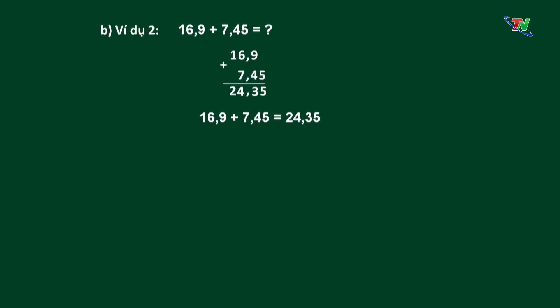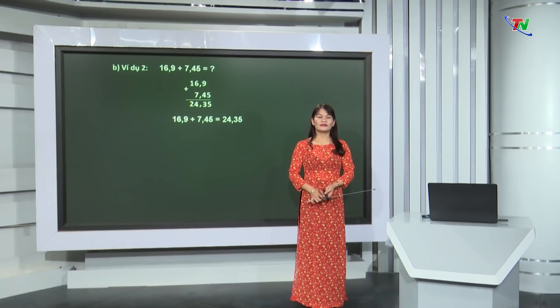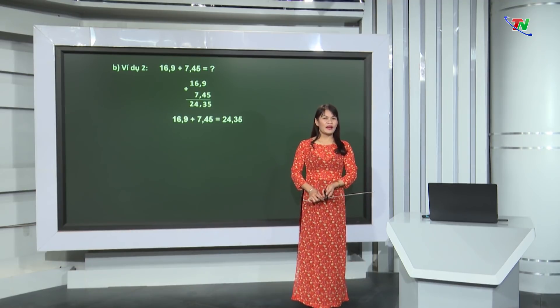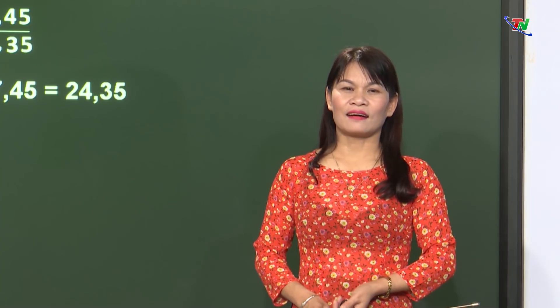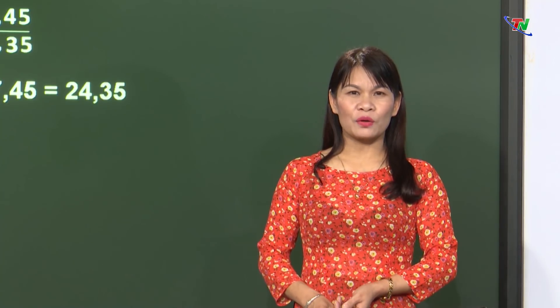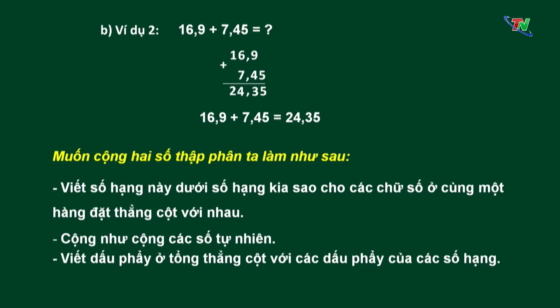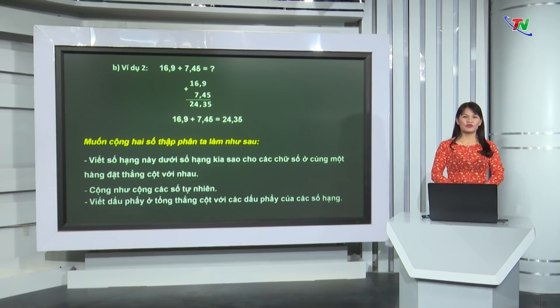Qua 2 ví dụ trên, cô đã giúp chúng ta củng cố lại cách thực hiện phép cộng 2 số thập phân. Muốn cộng 2 số thập phân, ta làm như sau: Viết số hạng này dưới số hạng kia sao cho các chữ số ở cùng 1 hàng đặt thẳng cột với nhau; cộng như cộng các số tự nhiên; viết dấu phẩy ở tổng thẳng cột với các dấu phẩy của các số hạng. Vậy là các em đã nắm chắc cách cộng 2 số thập phân rồi phải không?